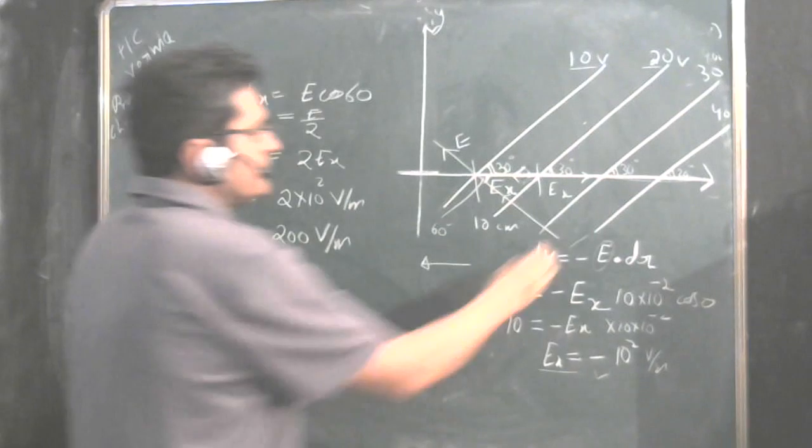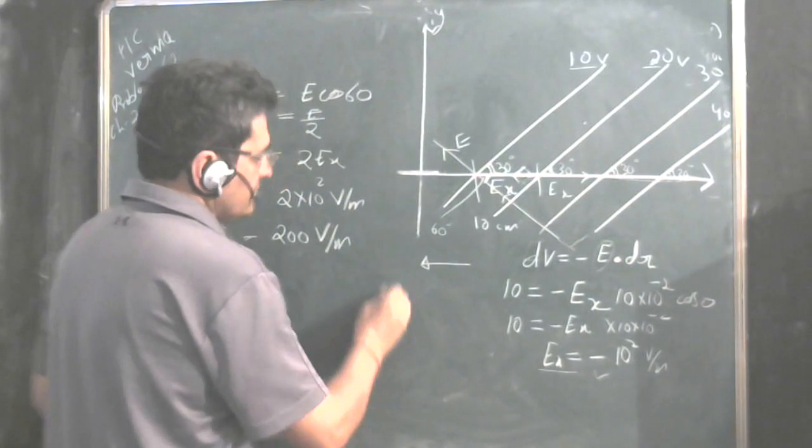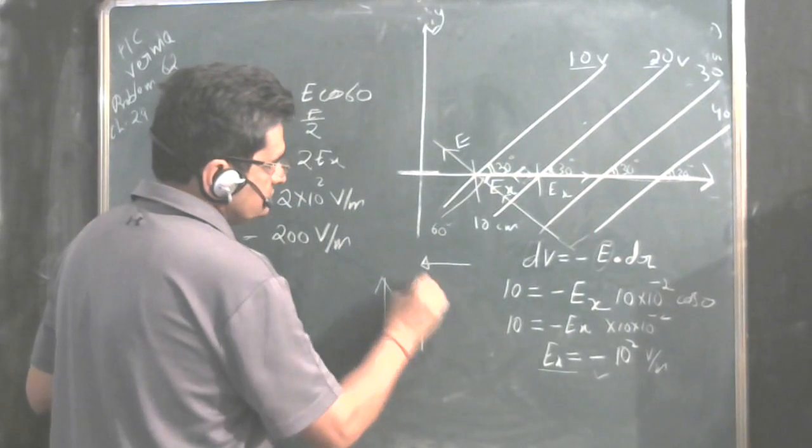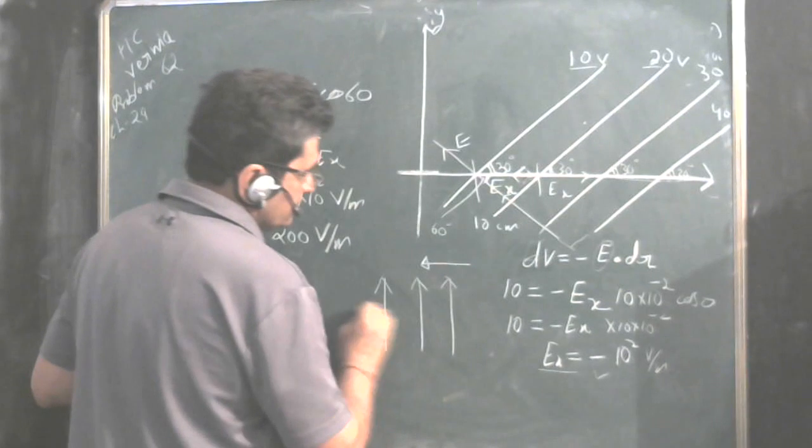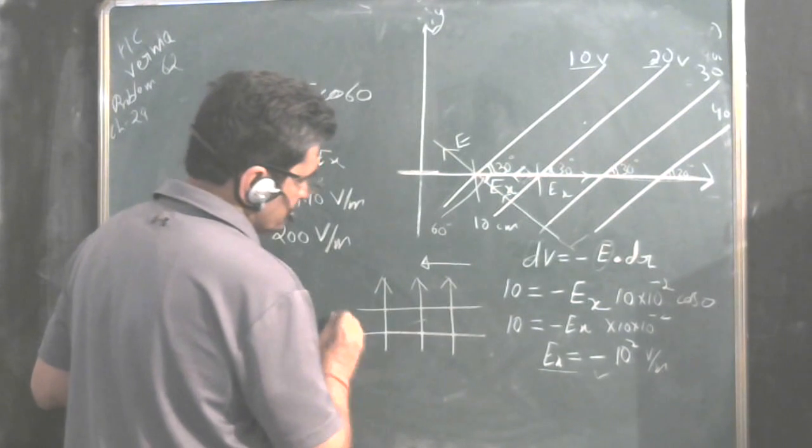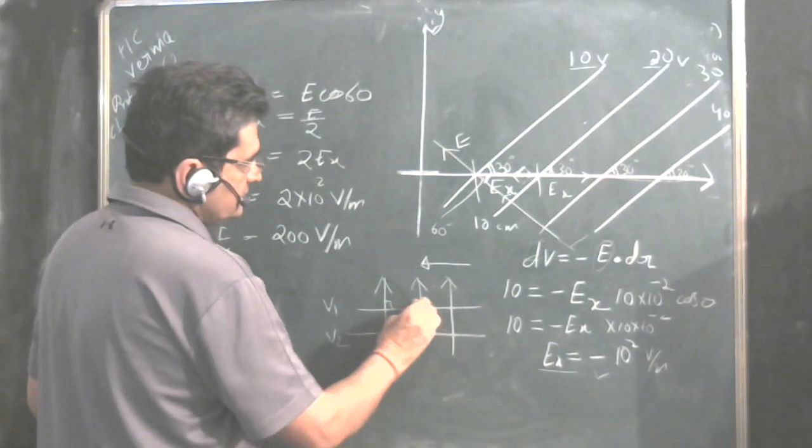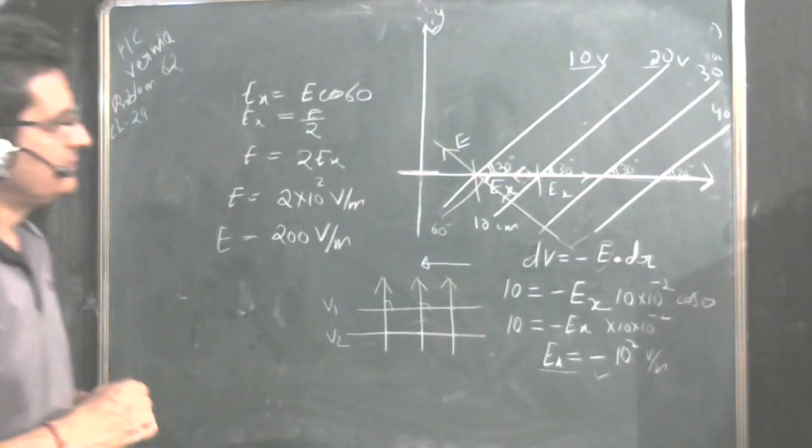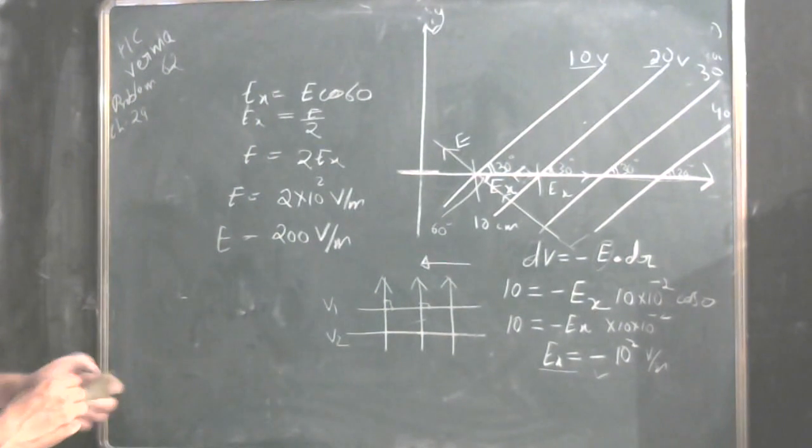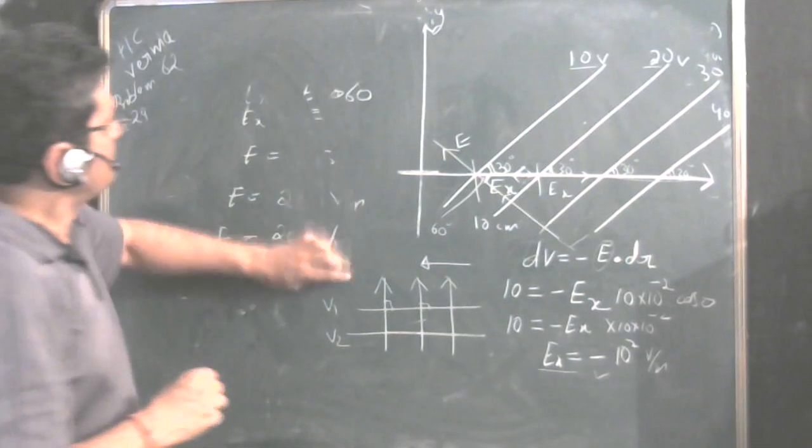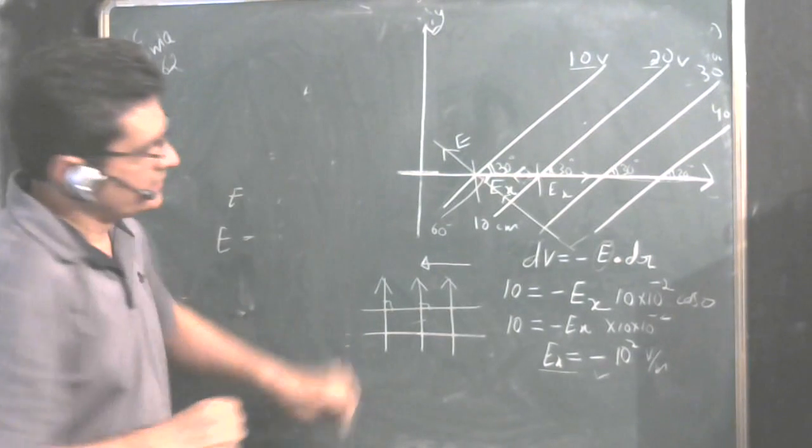You have to keep in mind that the electric field is always perpendicular to the equipotential lines. So if it is V1, V2, electric field will be like this. That solves the first part of the problem. Thank you.